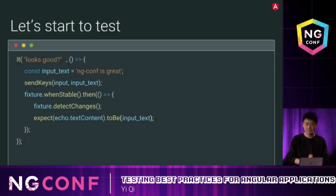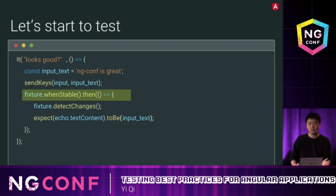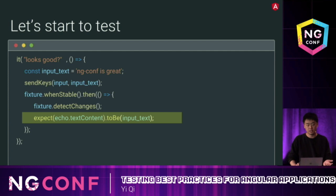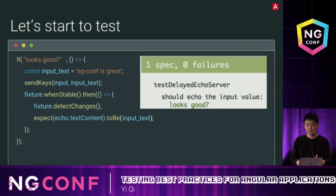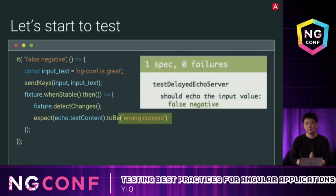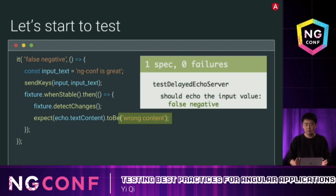Let's start to test that. First, we send keys to the input field, then wait for Angular to be stable, then detect changes, and check whether the echo is correct. Looks good — we run tests and the test passes. But does it really work? If we change the expectation to wrong content and test again, the test still passes. What's going wrong? Actually, the test completed too early, even before our async task was completed.